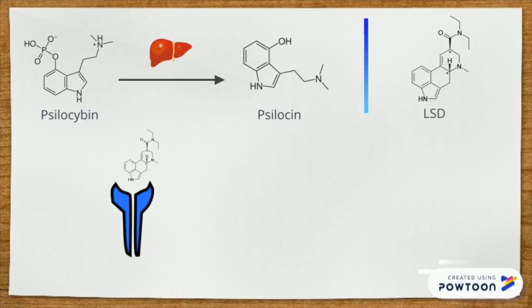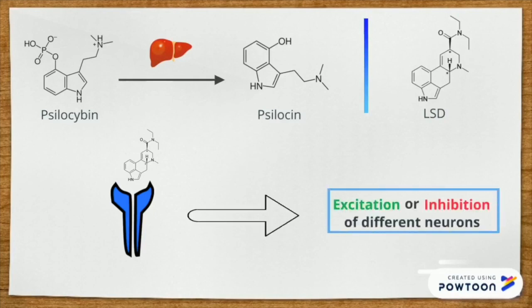There are 14 known subtypes of 5-HT receptors and psychedelics bind to each one of them with different affinities. This binding subsequently modulates the excitatory or inhibitory activity of the neurons which leads to the overall effects of psychedelics.